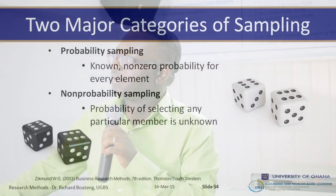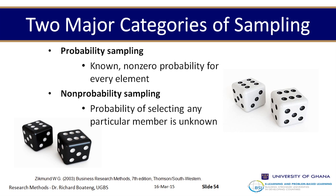Underneath each category there are different types of sampling techniques. When students write that they are using a 'probability sampling' approach, it doesn't really tell us anything. It doesn't tell us which specific technique within that approach they are using. We are more interested in which of the techniques underneath these broad approaches you are actually going to use.